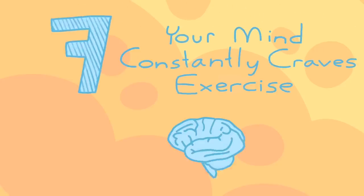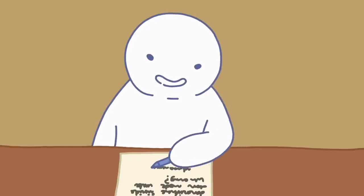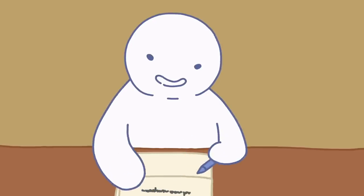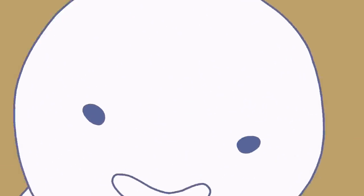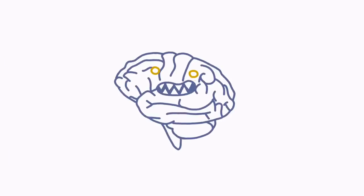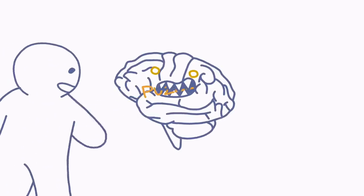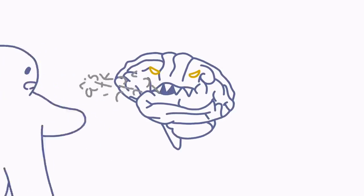7. Your mind constantly craves exercise. Being a highly intelligent person means you enjoy and need constant intellectual stimulation. In short, your mind has the munchies. You always want to do something that engages your brain skills, dips you in a new discovery, or lets you stretch your thinking muscles.